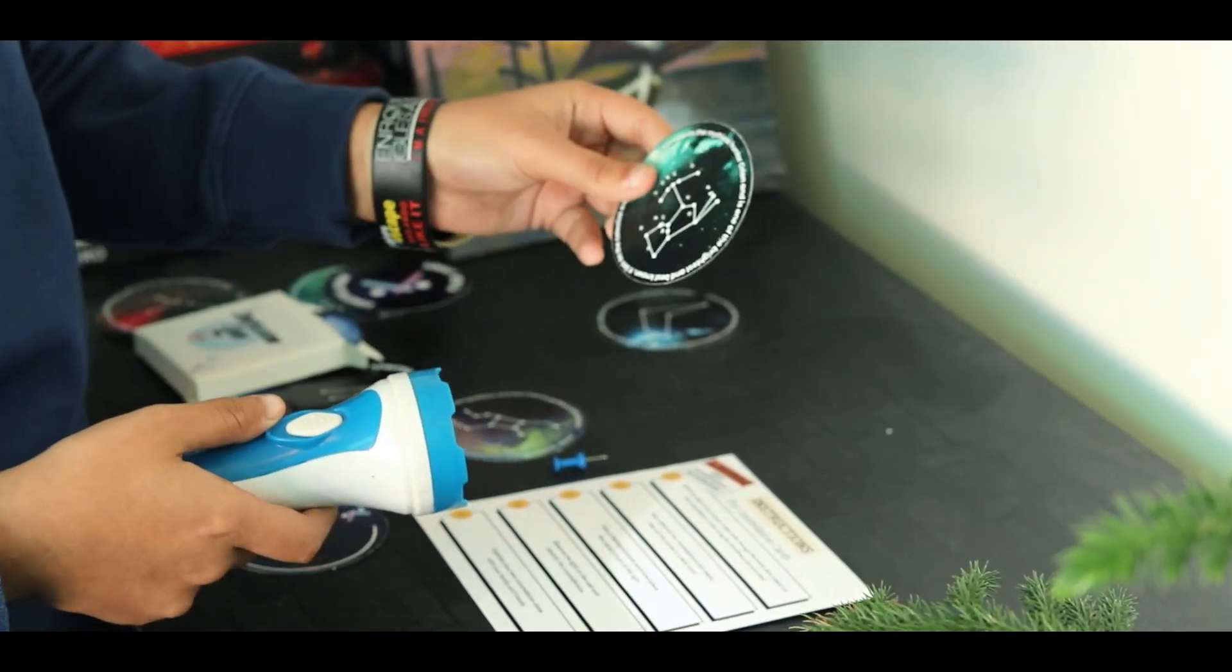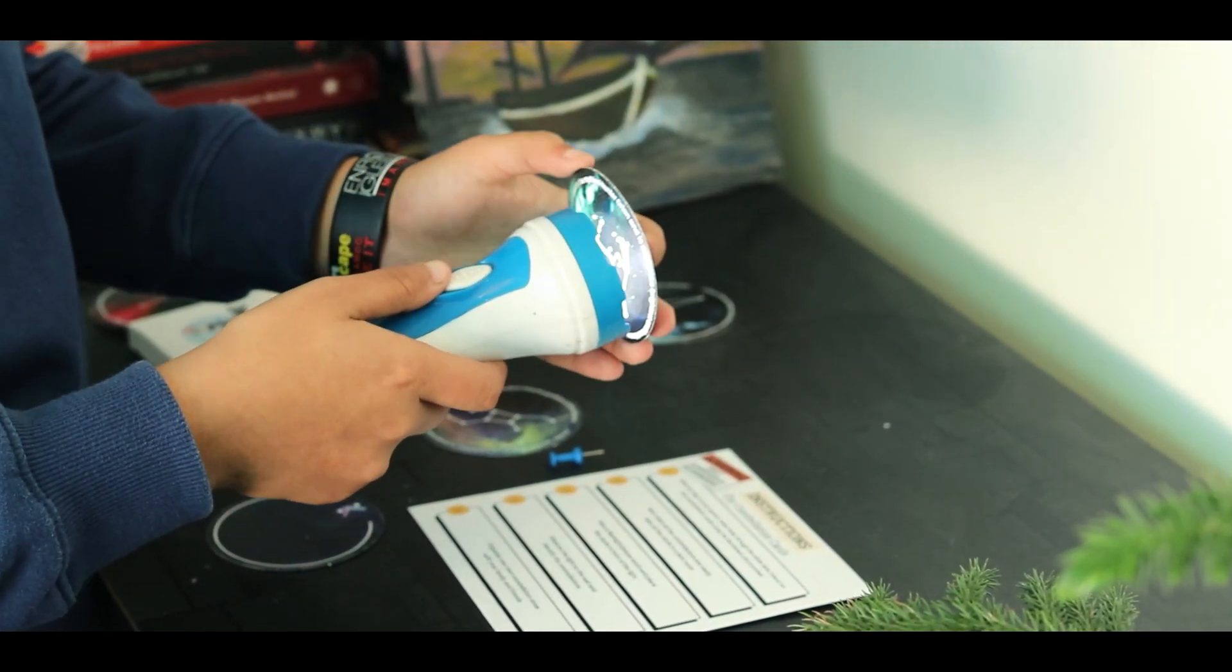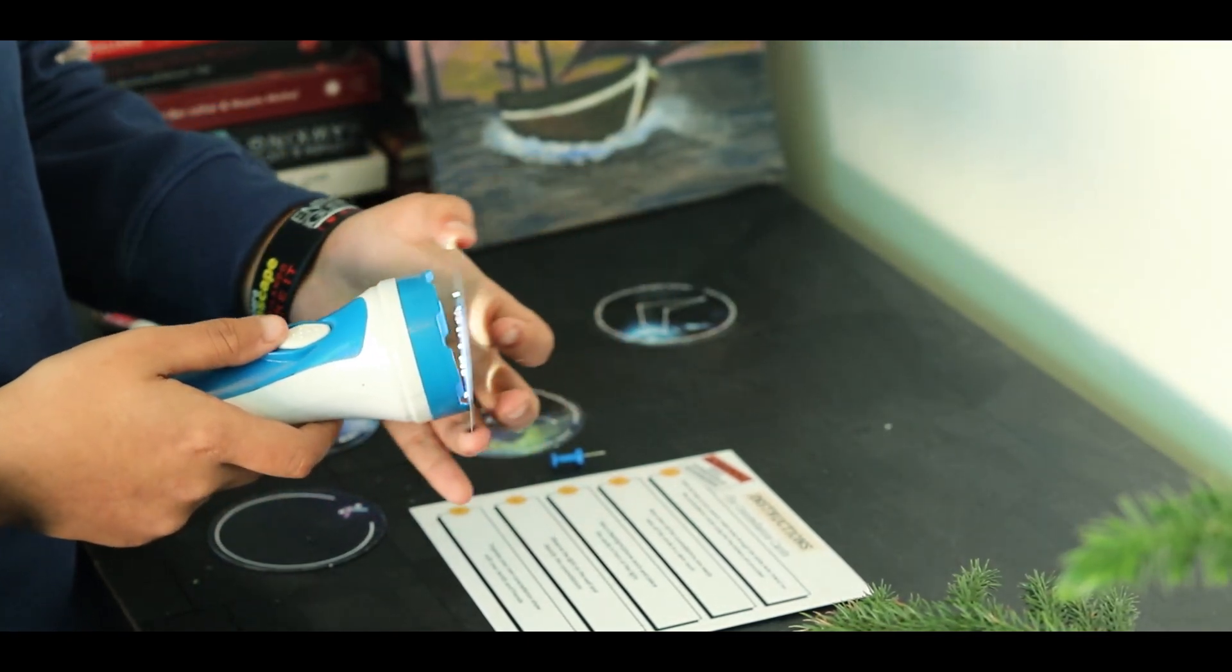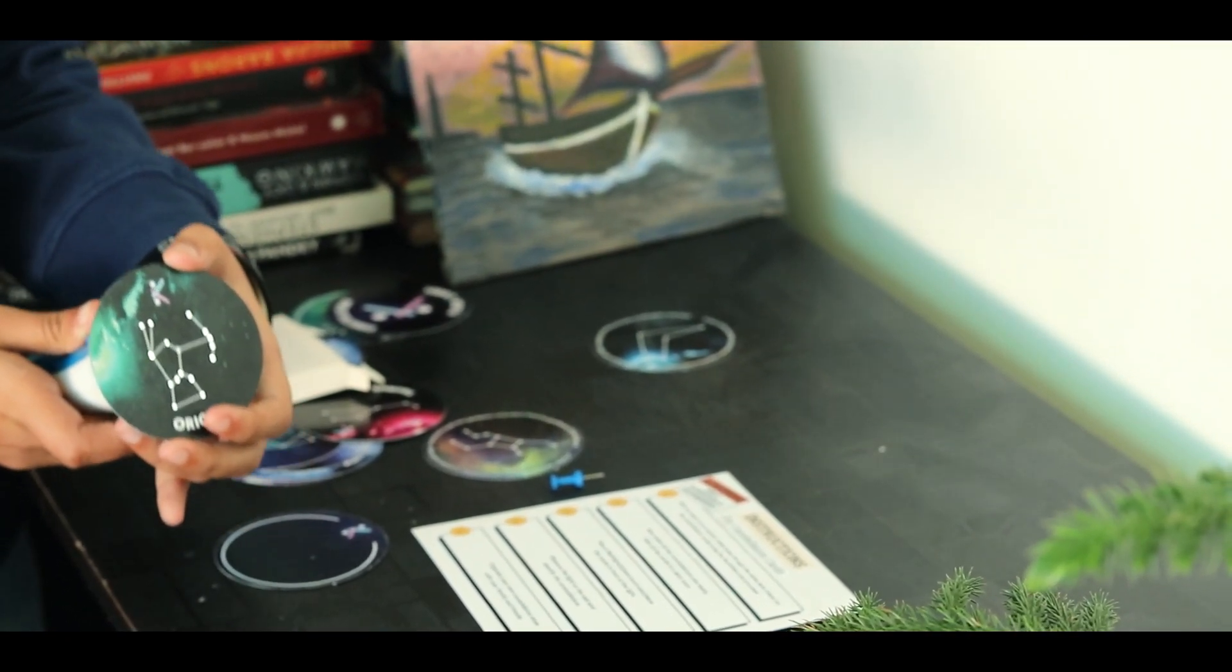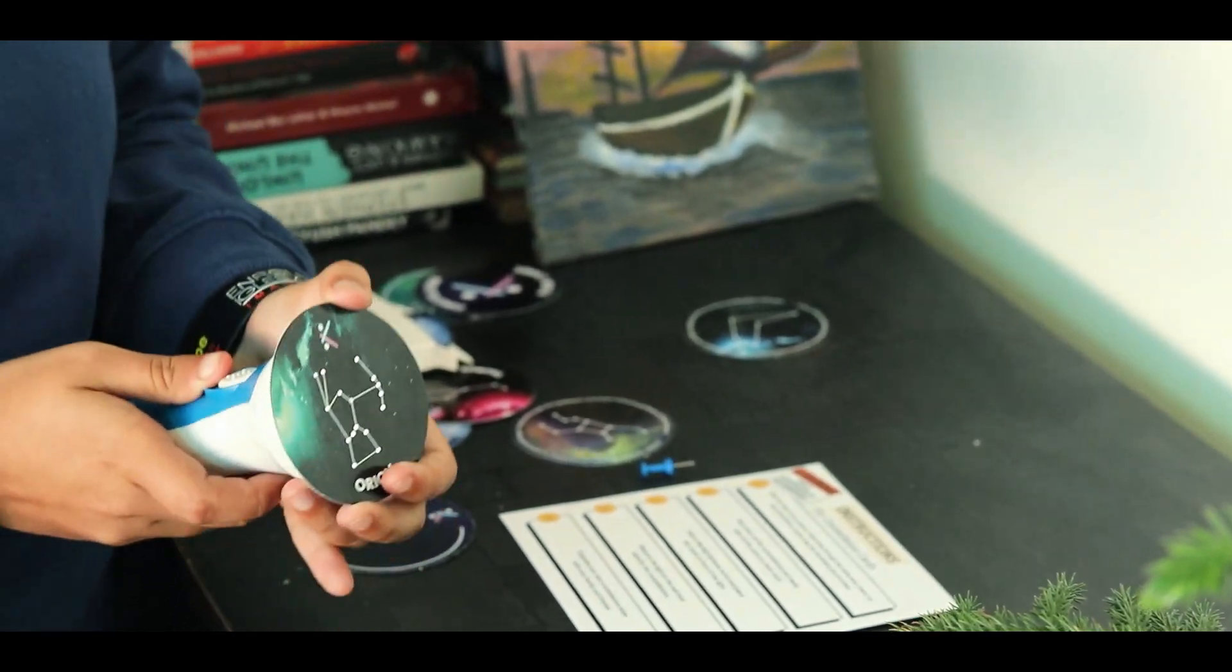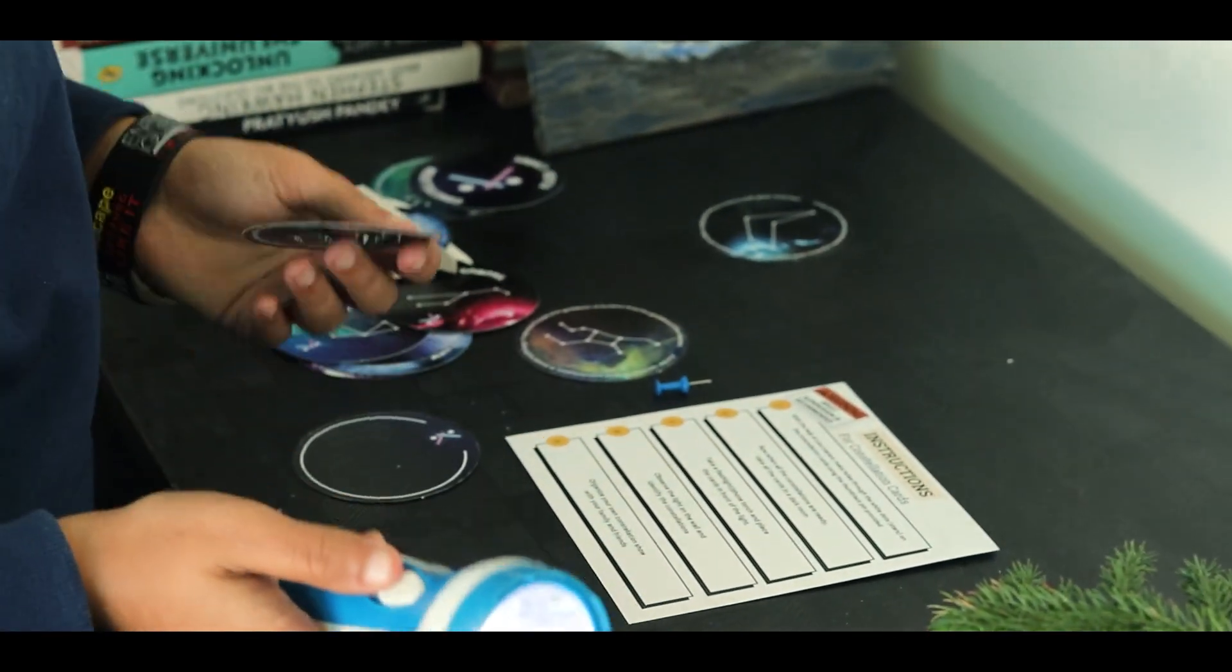And then we are going to use our torch or flashlight. And then we have to put the flashlight in front of the pattern of the stars, something like this. And then we have to take this setup to a dark place. So now let's go to a dark place.